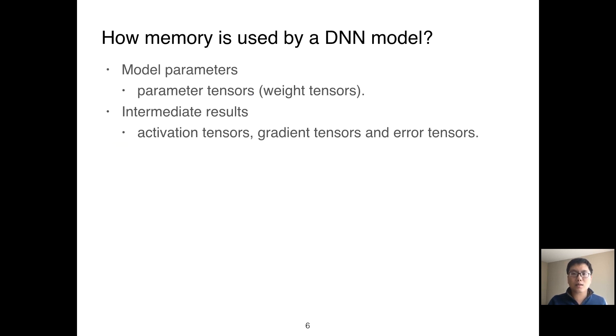We also need to understand the characteristics of tensors which occupy GPU memory. In a DNN model, there are two major memory use cases. The first use case is model parameters. In this figure, the green rectangles are the parameters. These tensors are not created by any operator and their values are only changed in the gradient update stage, which is the last step of a training iteration.